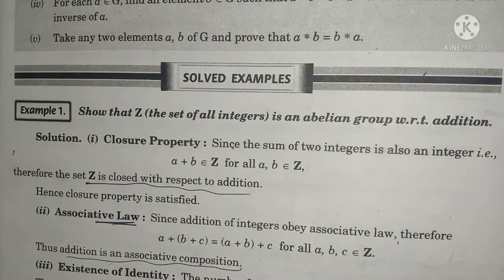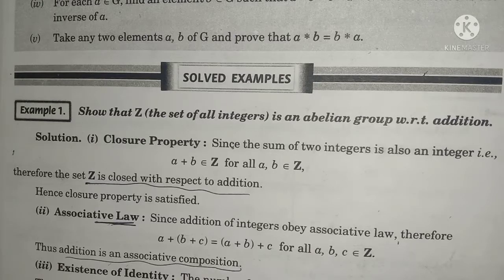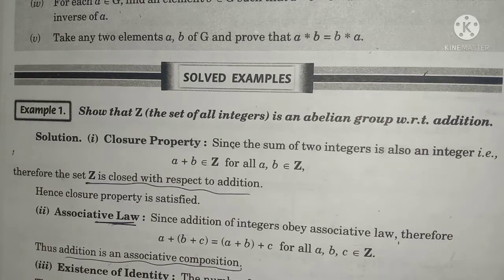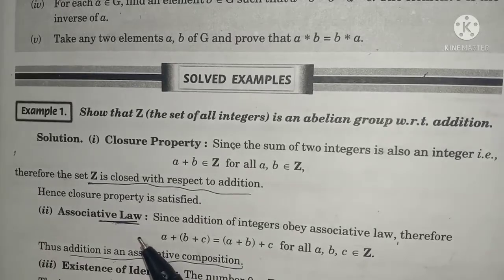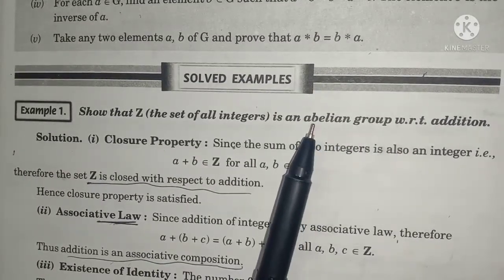Hello dear students, welcome back to the channel Hashtag StudyVista2021. Today is our second lecture on Groups and Rings Math. In the first lecture, we have done all definitions in order of a group, and today we will do our examples. There are 15 examples and we will do all the examples. You will feel there are more than 15, but you have to show almost some group or Abelian group.